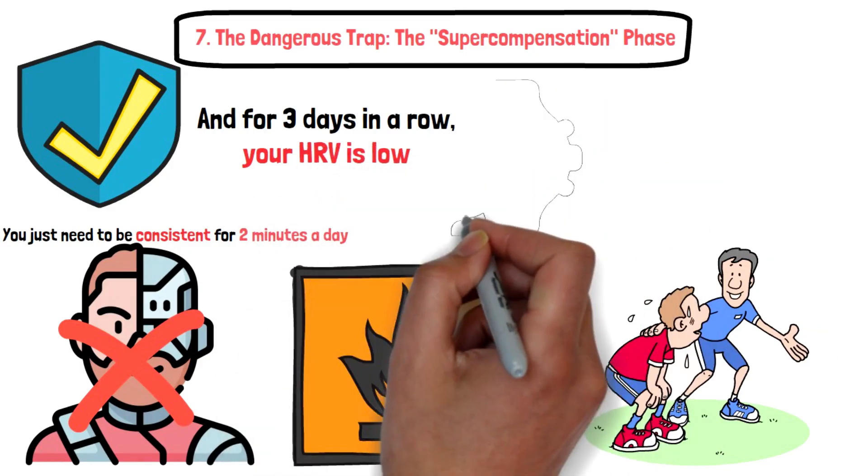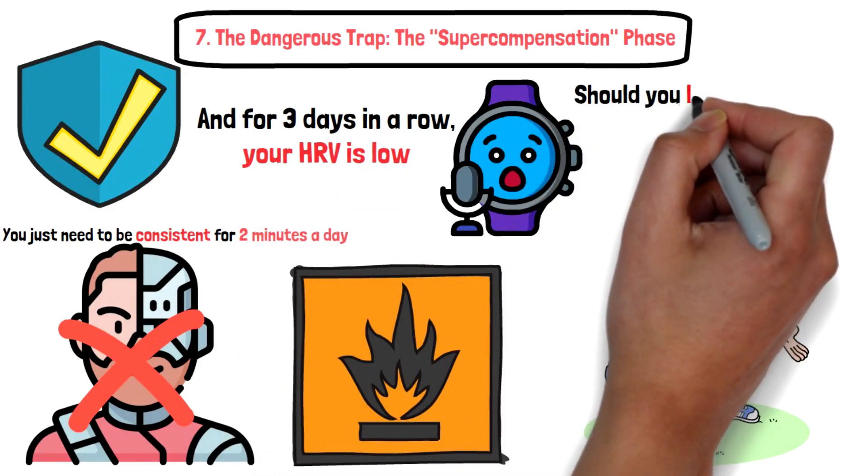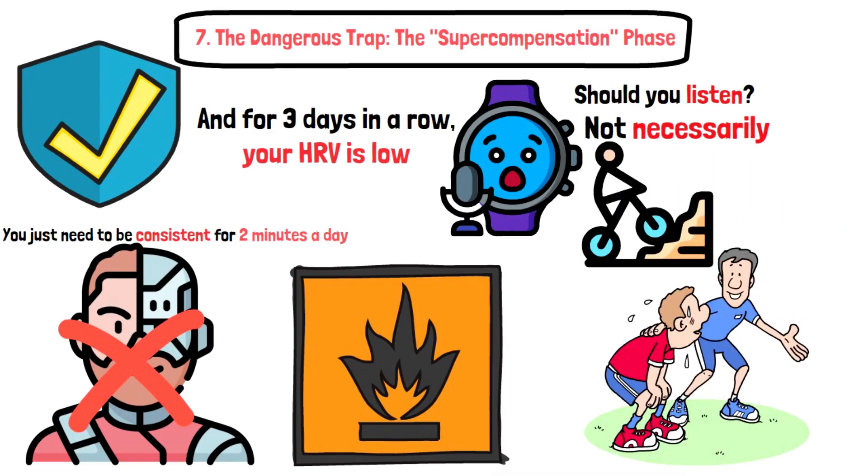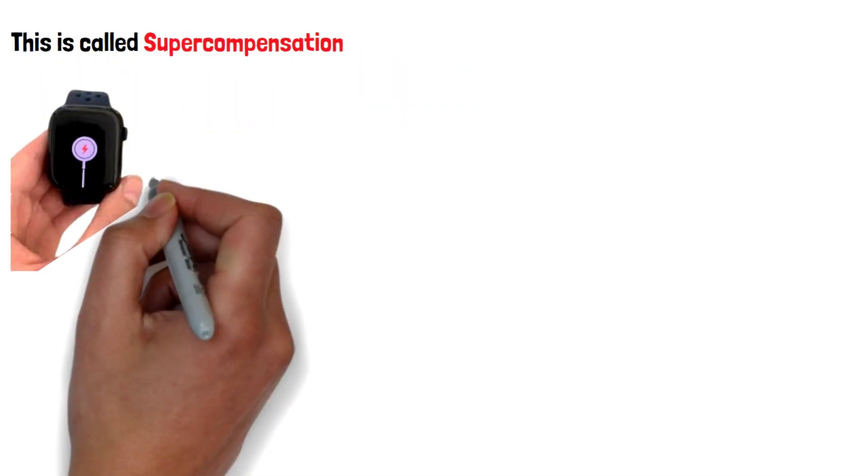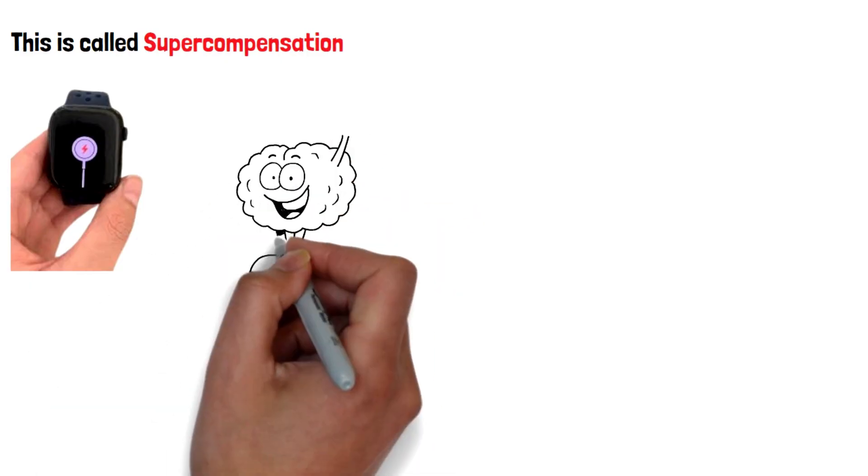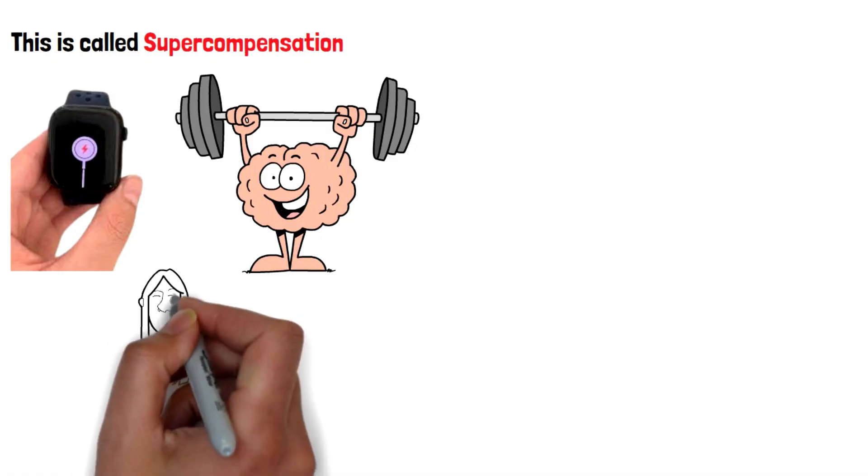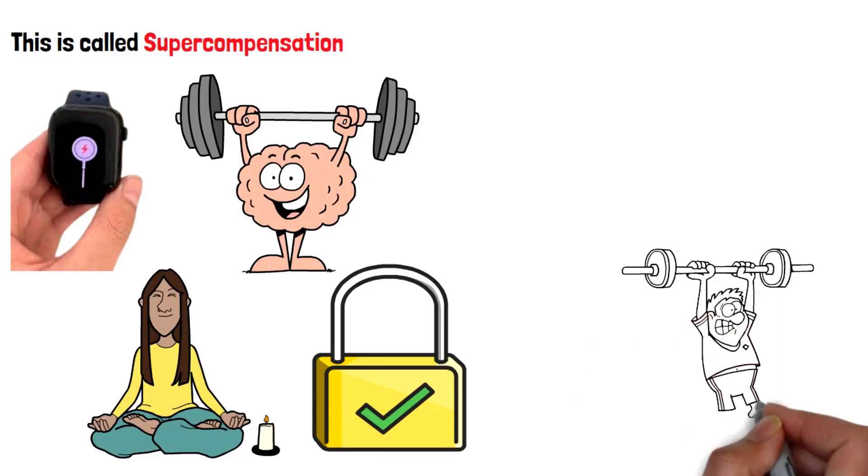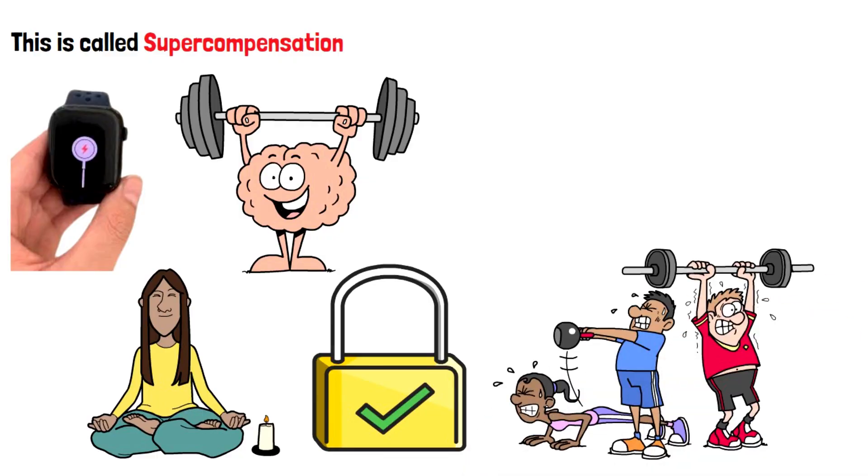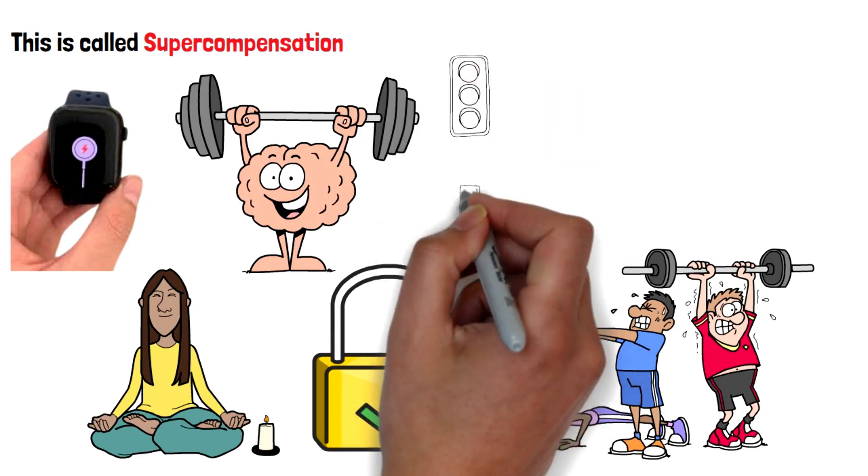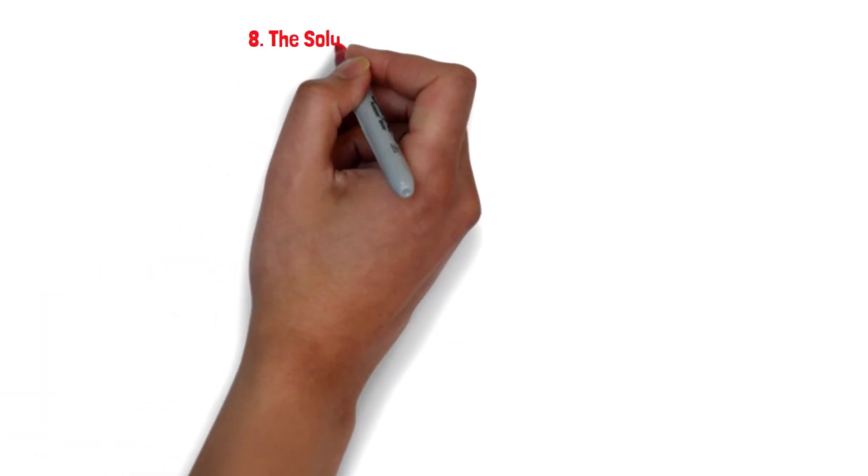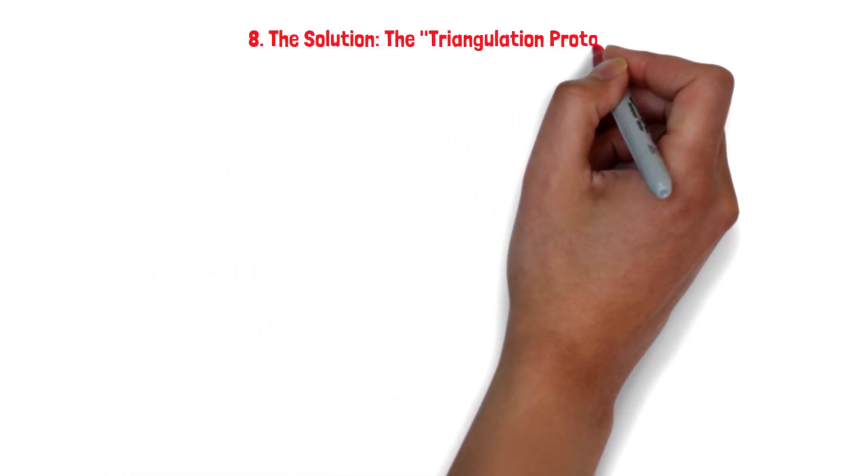We are digging a hole so your body can build a ladder to climb out of it. This is called supercompensation. If you back off every time your watch flashes red, you will never dig the hole deep enough to trigger the massive fitness gains. You'll stay in the comfortable middle forever. An algorithm tries to keep you safe; a coach tries to make you dangerous. Sometimes to get faster, you have to ignore the red light and drive through the fatigue.